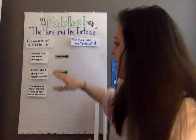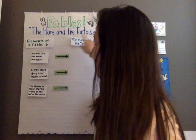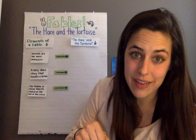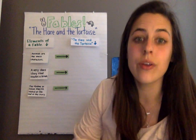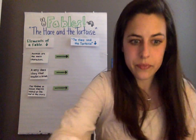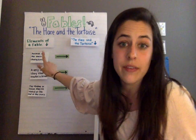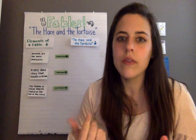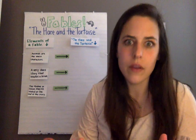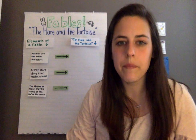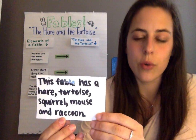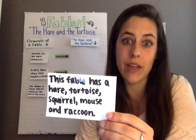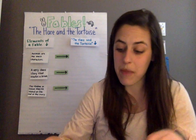Let's connect all of these elements to the Hare and the Tortoise. The first element is that animals are the main characters. Think about it — the hare and the tortoise, not only are they in there, but there are other characters too, and they're all animals. This fable has a hare, a tortoise, squirrel, mouse, and raccoon. It is full of animals, but we know that the hare and the tortoise are the main characters.